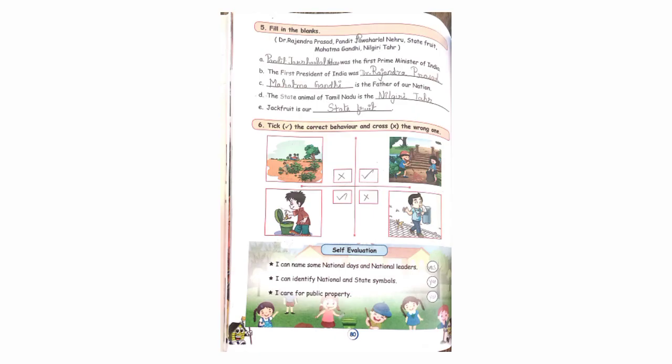Okay students, now we move on to the next page. Fill in the blanks. They have given options above and questions below. Pandit Jawaharlal Nehru was the first Prime Minister of India. The first President of India was Dr. Rajendra Prasad. Mahatma Gandhi is the father of our nation. The state animal of Tamil Nadu is Nilgirithar. Jackfruit is our state fruit.